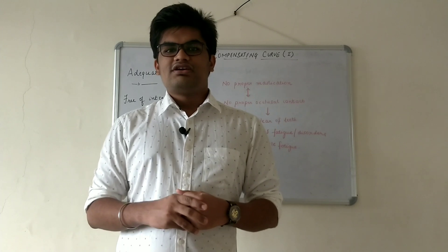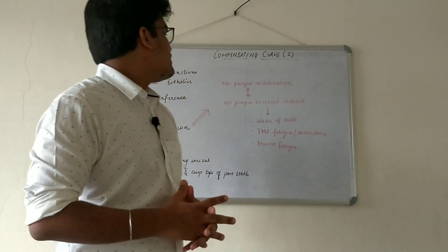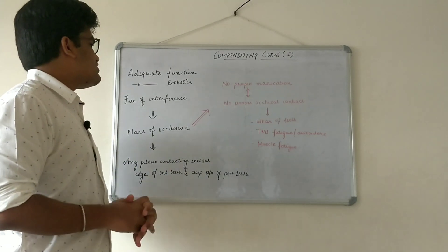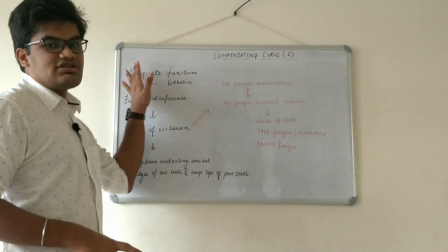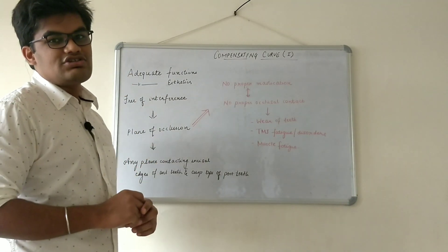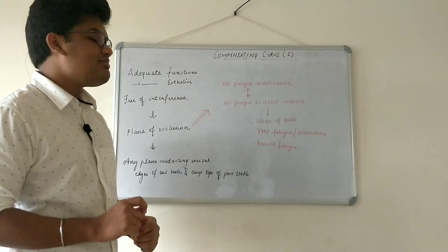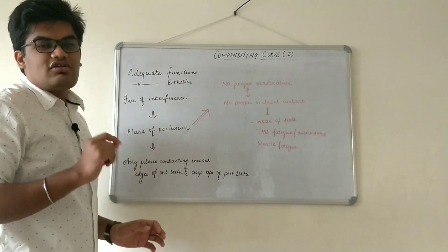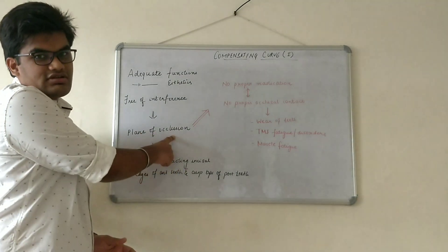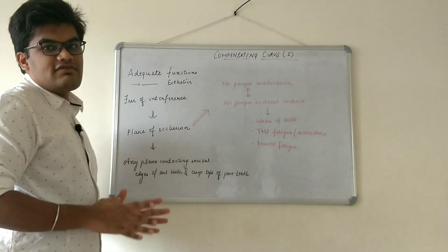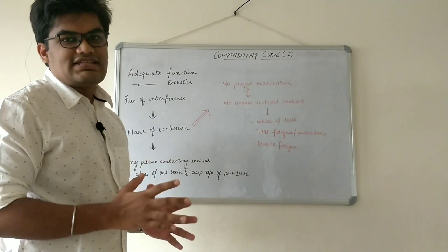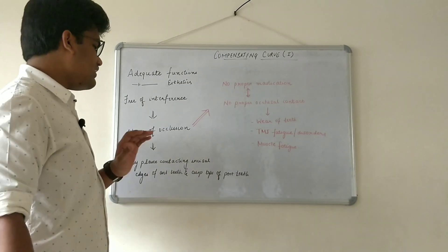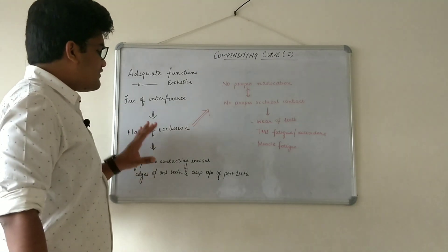For any type of prosthesis which we give to the patient, the prosthesis should carry out adequate functions, aesthetics, and obviously should be free of interference — that is very important. To give these three qualities into the prosthesis, what we need to incorporate is the plane of occlusion. This plane of occlusion is any plane which contacts the incisal edges of the anterior teeth as well as the cusp tips of the posterior teeth.